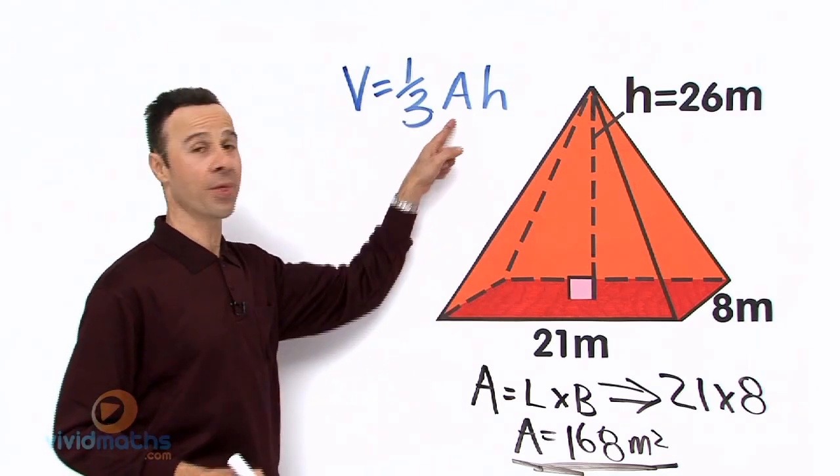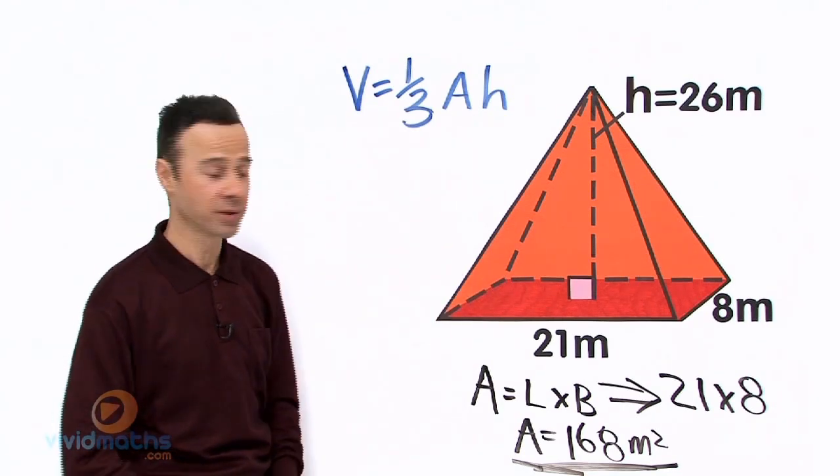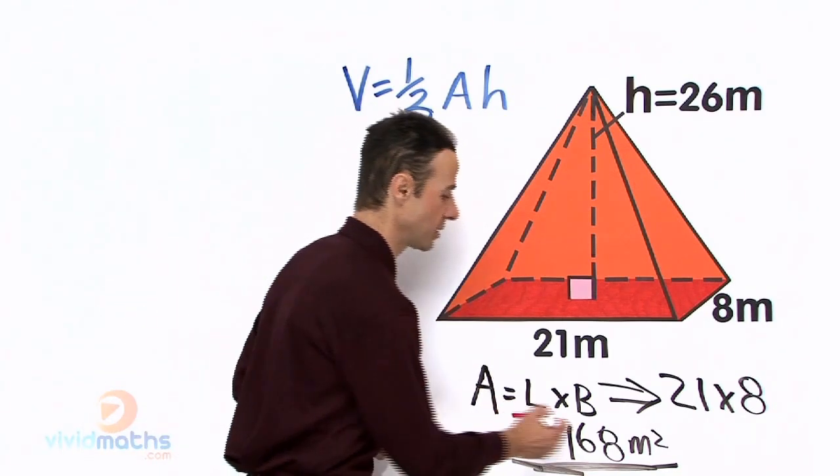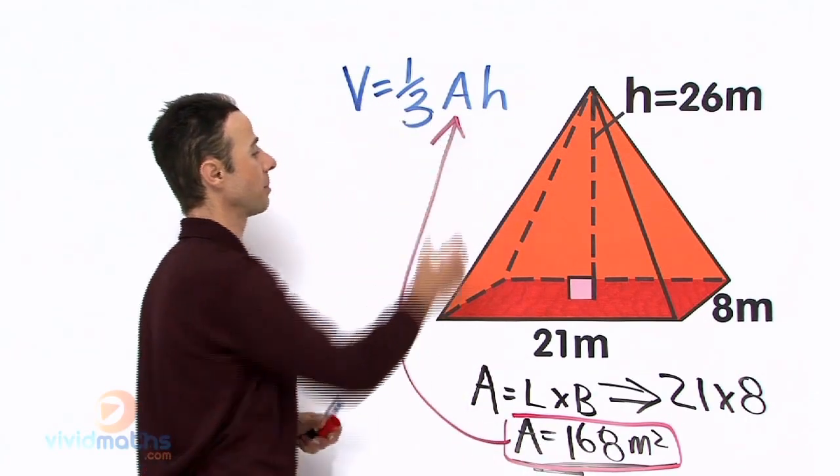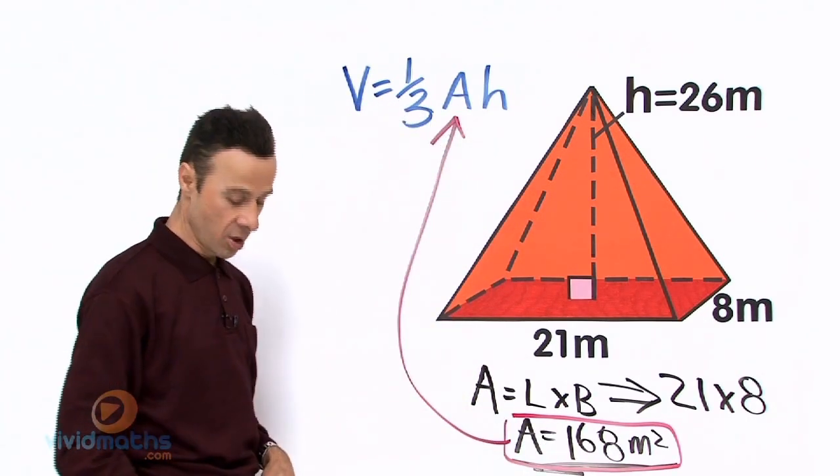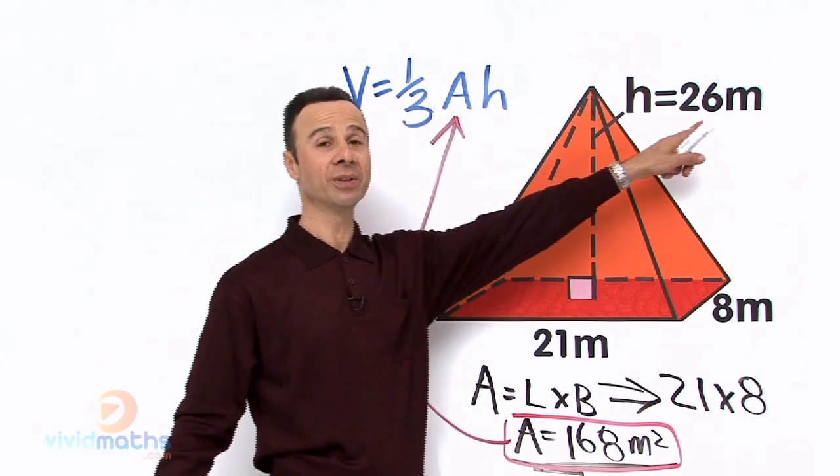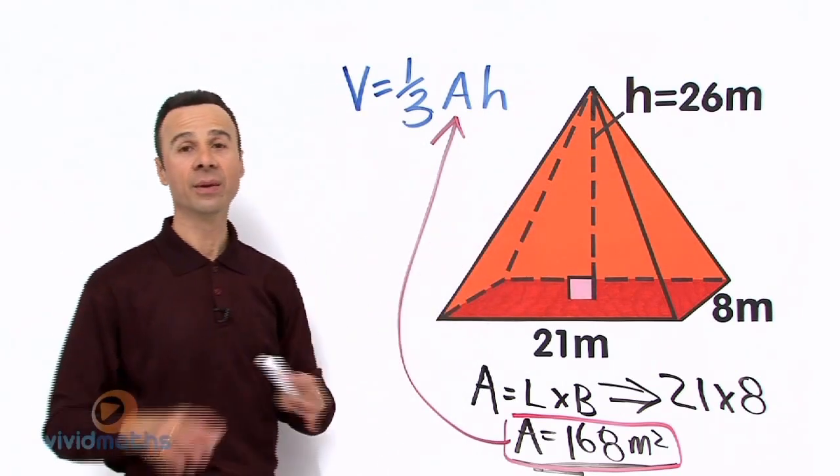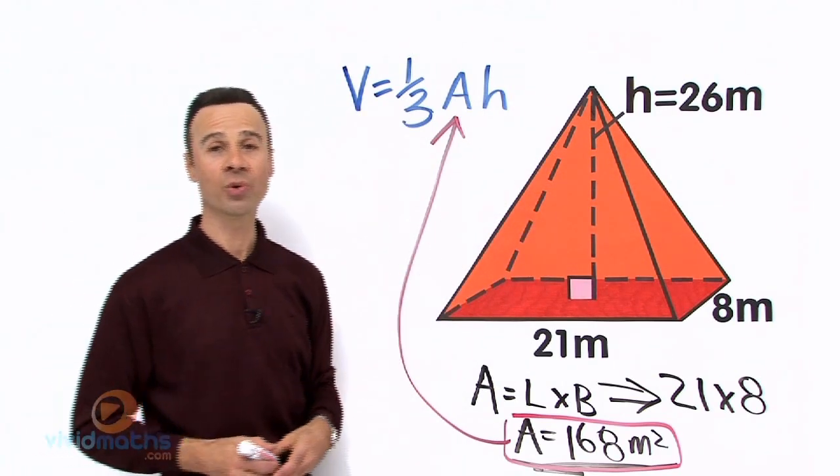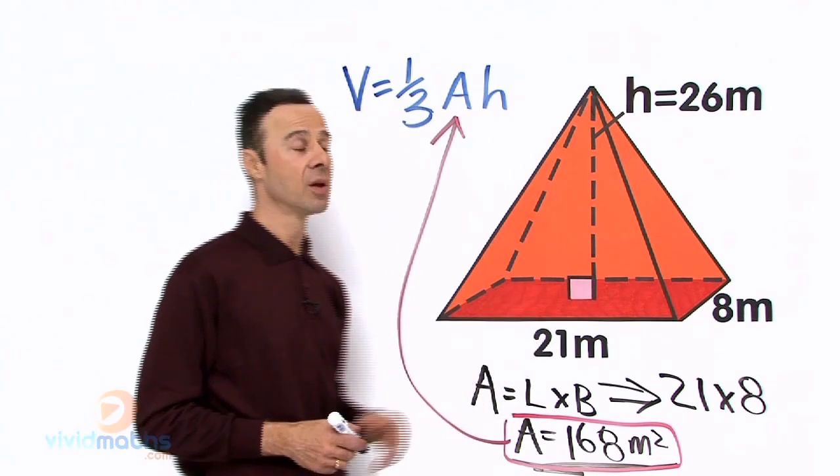So that's what we need to put in there. So let me just mark that out so we can take this base and put it right in that part there of the formula. Okay, now we just plunk in the 26 meters that goes into there and then we can come up with the total grand scale of this volume for this pyramid.